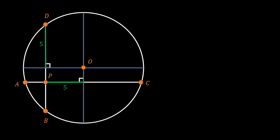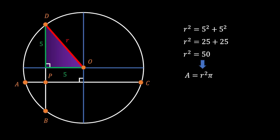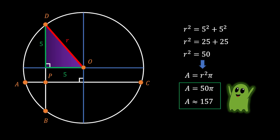Now we can pull a line from the center of our circle to point D — this line will be the radius. If we translate our vertical green line upwards to point O, we can see that we are forming an isosceles right triangle. It is now easy to find the radius, since it is the hypotenuse of this triangle. Using the Pythagorean theorem: R² equals 5² plus 5², so R² equals 25 plus 25, and R² equals 50. Since the area of the circle equals R² times π, the area is 50π, which is approximately 157 square units.